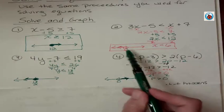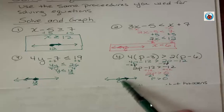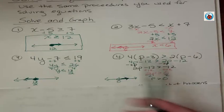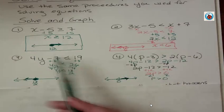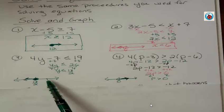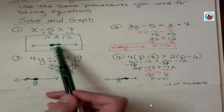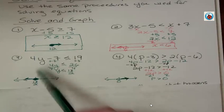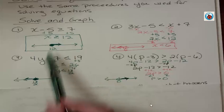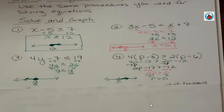These 2 equations had open circles because there was no equal to part. 1 went left and 1 went right. And these 2 equations, or these 2 inequalities, I should say, go to the left and right also. But they have shaded circles because of the equal to part.